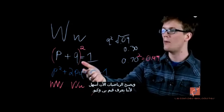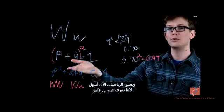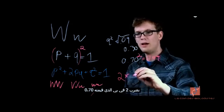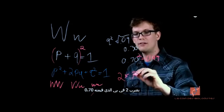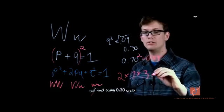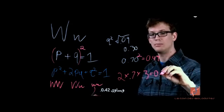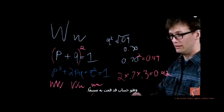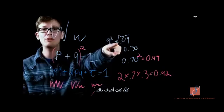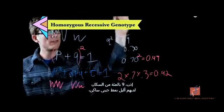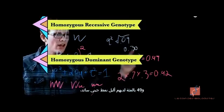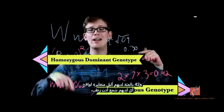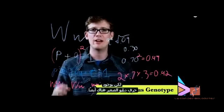Now the math gets even easier because we know p and q. To figure out how many heterozygotes there are, we do 2 × p × q = 2 × 0.7 × 0.3 = 0.42. So: 9% of the population is homozygous recessive, 49% is homozygous dominant, and 42% is heterozygous — displaying wet earwax, but carrying that little w as well.